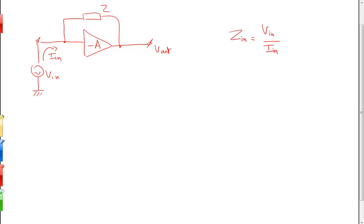First case: let's assume that the open loop gain is equal to zero. The circuit simplifies to this. The input impedance is easily calculated - it's equal to the input voltage divided by the input current, which in this case is of course equal to the impedance Z.